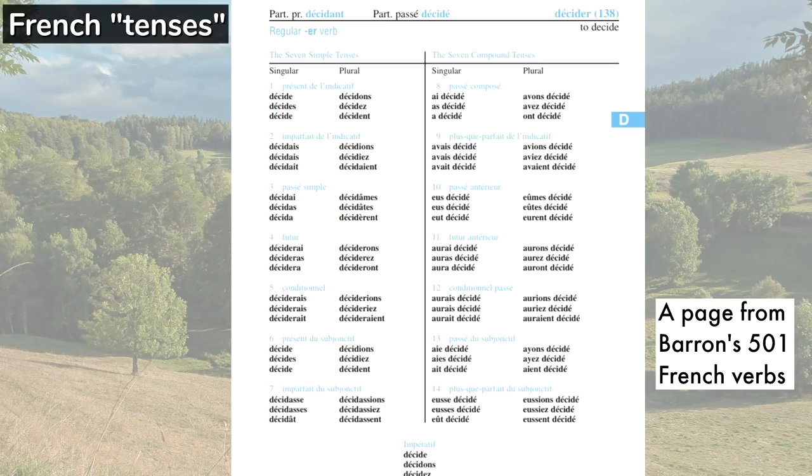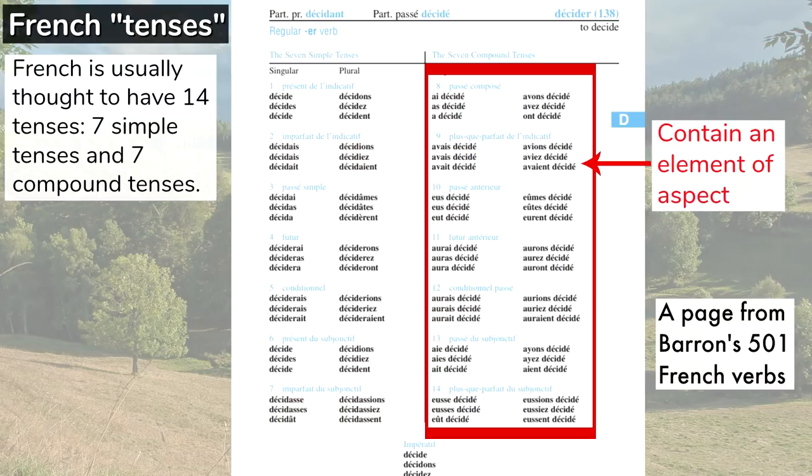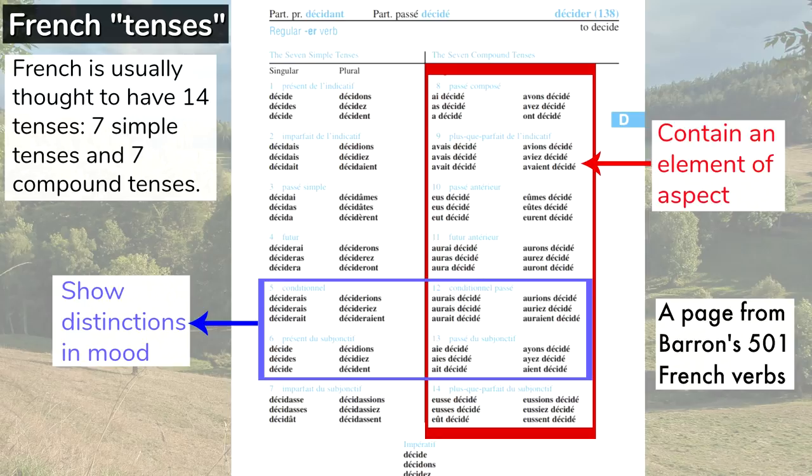Take French for instance, which is usually thought to have 14 tenses, 7 simple tenses and 7 compound tenses. But the 7 compound tenses contain an element of aspect, shown through the use of auxiliary verbs. And the conditional and subjunctive forms show distinctions in mood. The conditional form suggests that one action is dependent upon another, and the subjunctive form indicates desire or probability. These are moods, and even though they have separate verb forms and are often referred to as separate tenses, they really express both tense and mood.